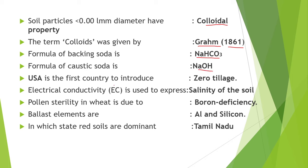The formula of caustic soda is NaOH — sodium hydroxide. USA is the first country to introduce zero tillage. Electrical conductivity is used to express the salinity of soil. Pollen sterility in wheat is due to boron deficiency. The ballast elements are aluminum and silicon — they are present in abundance but their absence may not affect plant growth.